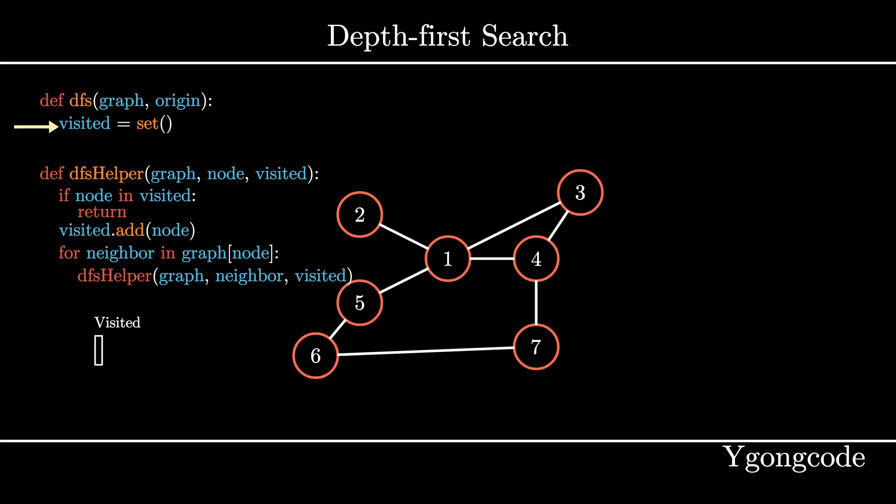There are two popular ways to implement depth first search: an iterative approach using a stack or a recursive approach leveraging the call stack. We will be visualizing the recursive approach because it is easier to implement but harder to visualize.